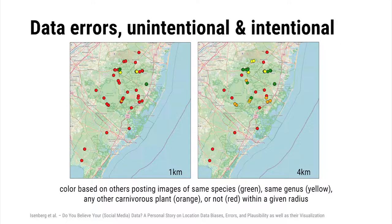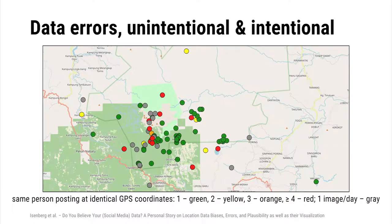What about data errors? We looked at whether we can verify data using posts from others and from the same person. First, for a given post of a given species, we checked whether other posters have also posted the same species nearby, the same genus nearby, or some other plants nearby — indicated by green, yellow, and orange. We can also detect potential errors if a given poster has posted more than one image at the exact same GPS location. One image seems okay, two becomes questionable, and more than two — shown in orange and red — clearly suggests manipulation.